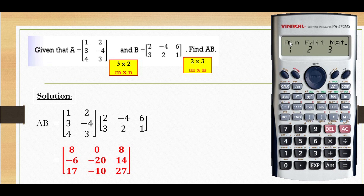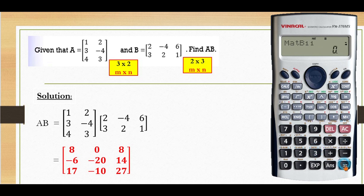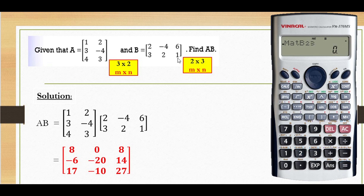Then press shift for DIM, number 2, for matrix B. M is 2. Then the column N is 3. Okay, B 1,1 is 2. B 1,2 — first row, second column — is negative 4. Then 1,3 is 6. Then 2,1 is 3. Then 2,2 is 2. And the last one, 2,3 is 1.